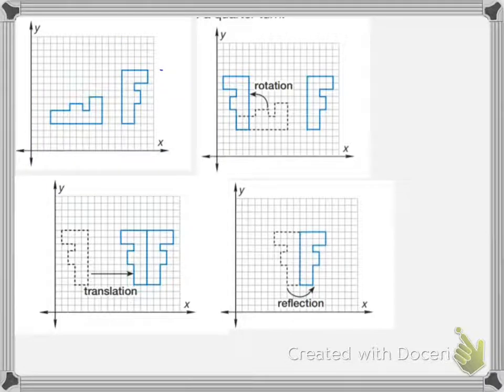And we do that by using translations. So the first type of translation is called a rotation, and that's where you take and you rotate a figure. So you can see in this picture we're rotating this shape upwards so it's standing up like this one is over here. That's a rotation.